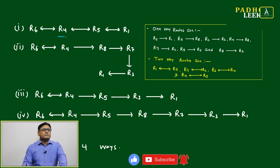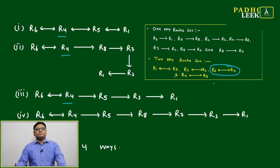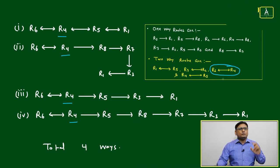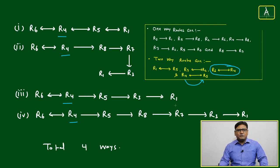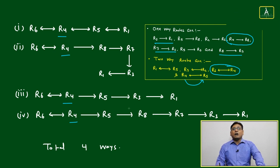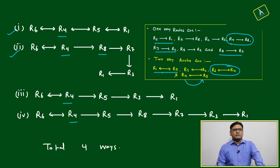From R6, the only option is to go to R4. From R4, one option is to go to R5 — a well-established route. Another option is from R4 directly to R8, then R8 to R7, R7 to R3, and R3 to R1. So one valid route is: R6 → R4 → R8 → R7 → R3 → R1.